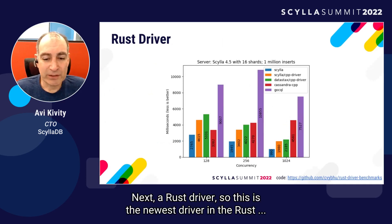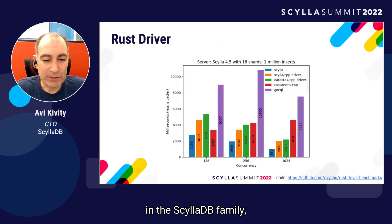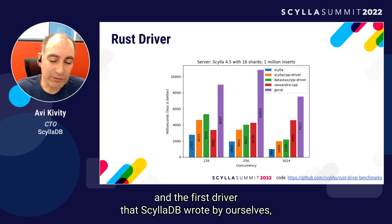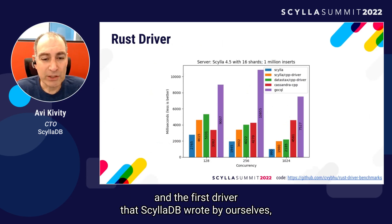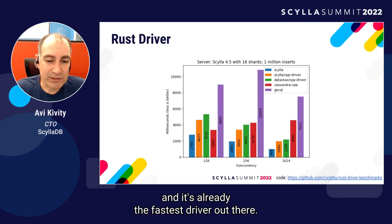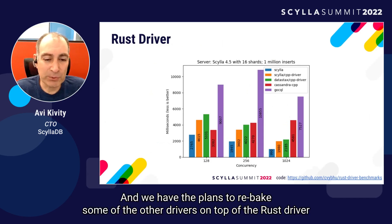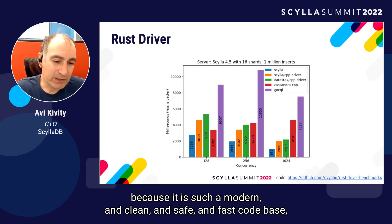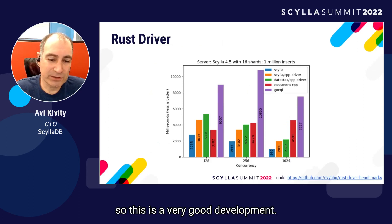Next, a Rust driver. This is the newest driver in the ScyllaDB family and the first driver that ScyllaDB brought by themselves. It's already the fastest driver out there. We plan to rebase some of the other drivers on top of the Rust driver because it has such a modern, clean, safe, and fast code base — a very good development.